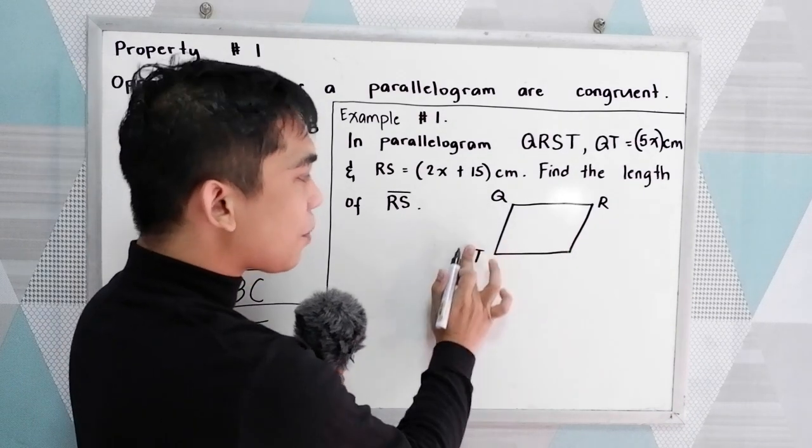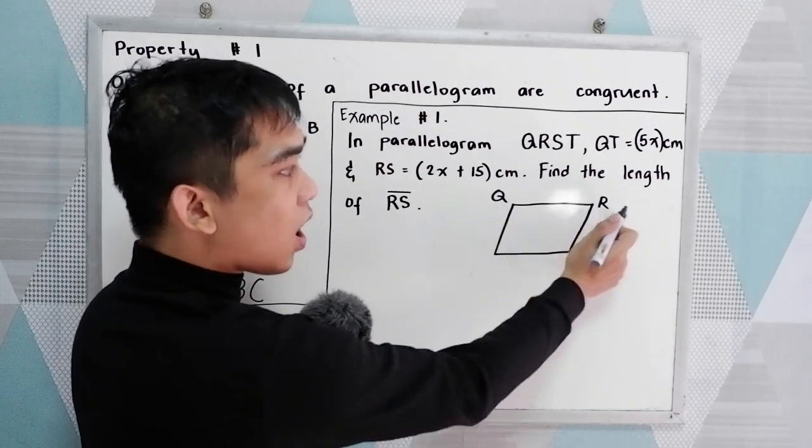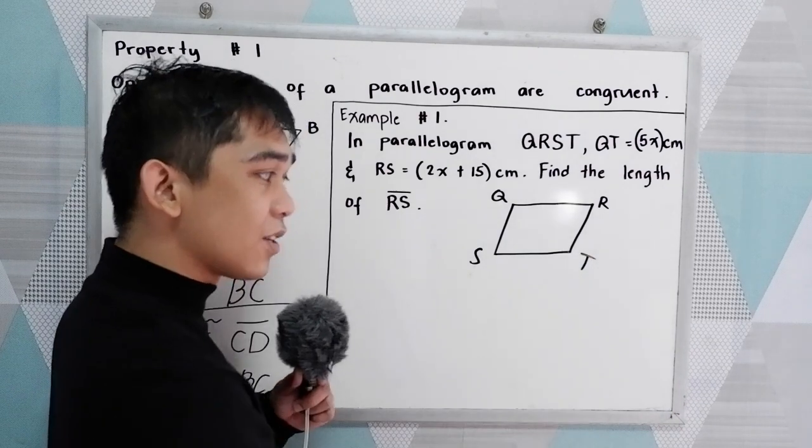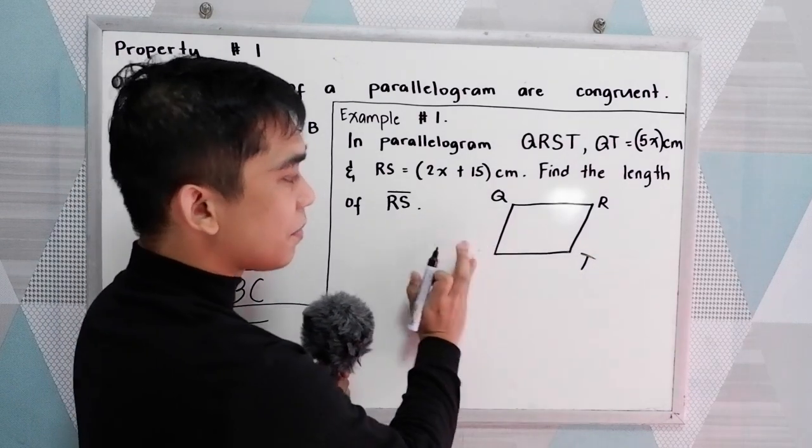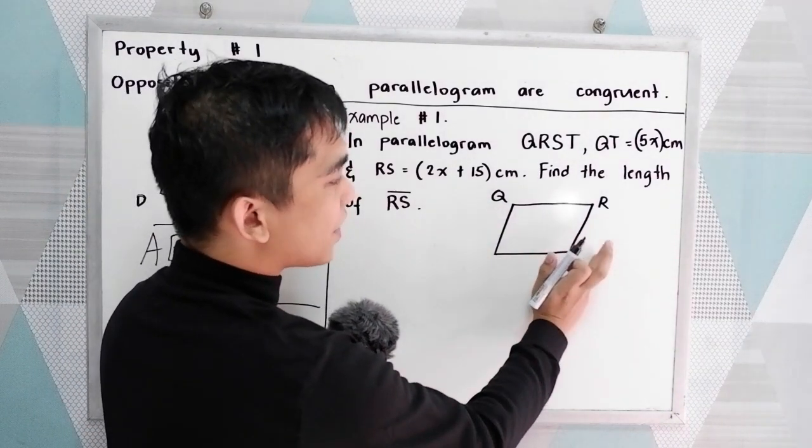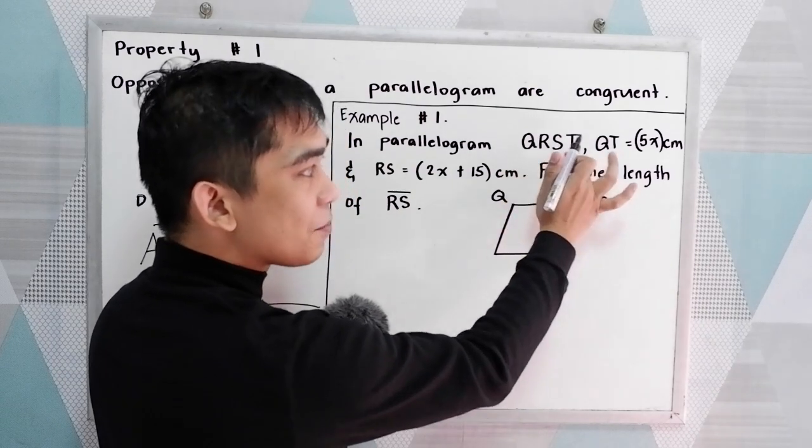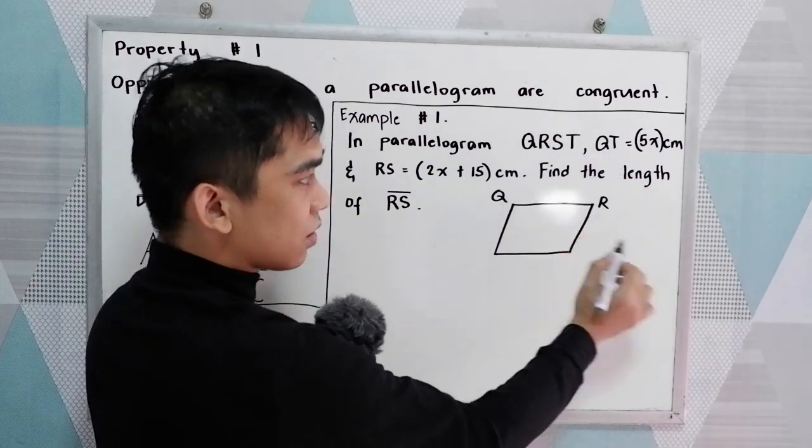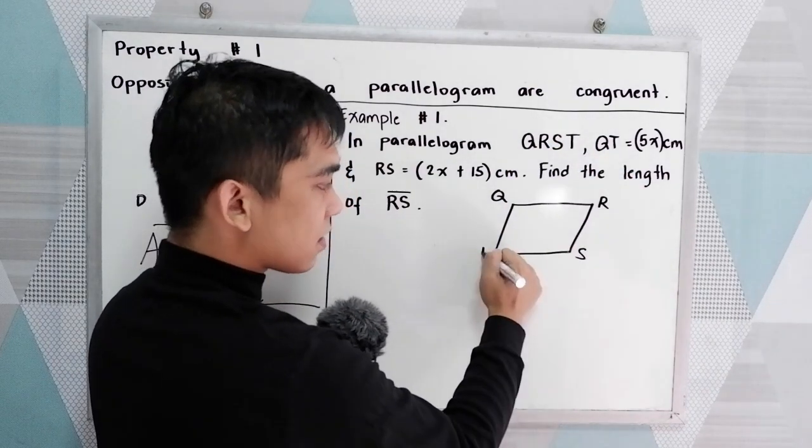If you write your parallelogram like this one, QRST, that is wrong. Because all the consecutive vertices must be in proper position. So QRST.